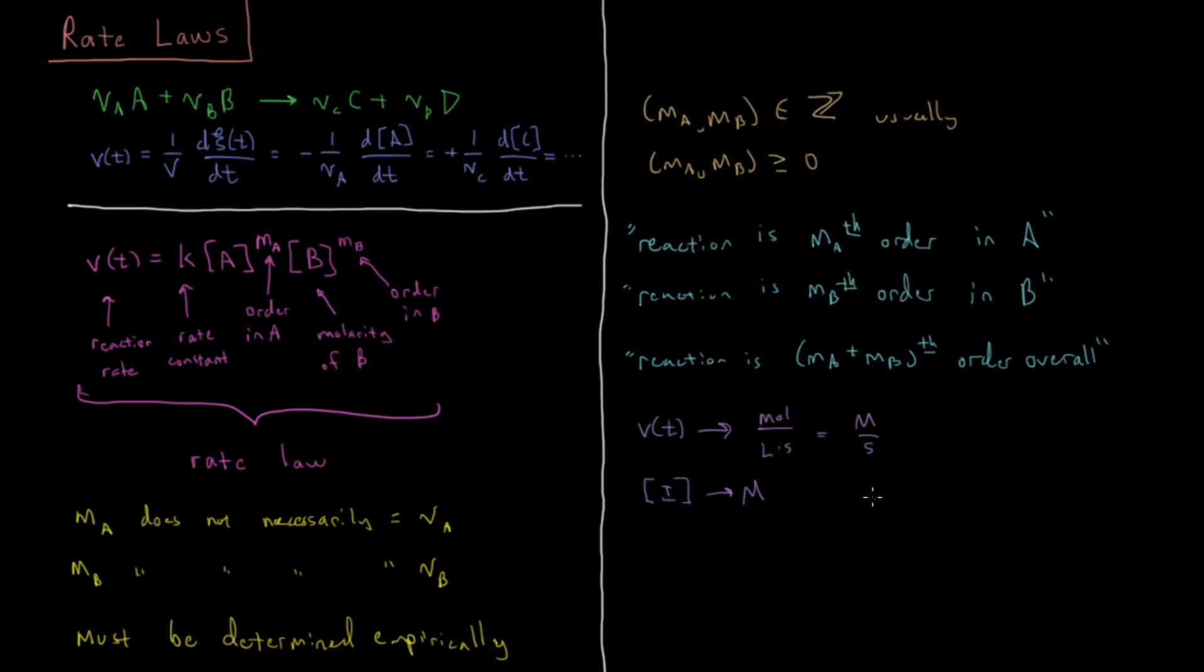And we can make a table here of some values, the units of K and the order. So if our reaction is 0 order, 1st order, or 2nd order, the two sides of this equation have to have equal units. So this side, as we saw, is molarity per second. If your reaction is 0 order, then this is 0 and this is 0, so this has to be in molar per second.